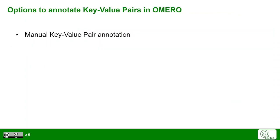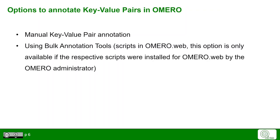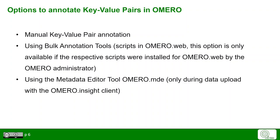We will now focus on three ways of annotating metadata in OMERO: manual key-value pair annotation, bulk annotation tools using scripts in OMERO web (available only if the respective scripts were installed by the OMERO administrator), and the metadata editor tool OMERO MDE, which can be used during data upload with OMERO Insight.